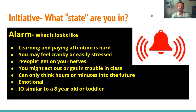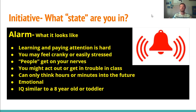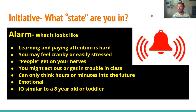The third state is the alarm state. Maybe you're sensing a little pressure or some stress, or something happened at home, or you argued with somebody and you're feeling a little tense. Learning and paying attention is hard — you really have to try to focus, and sometimes you're only able to do it for a few minutes or even a few seconds. You might feel cranky or easily stressed, like you're on edge. People get on your nerves, you just want to be by yourself. You might act out or get in trouble in class, or as an adult, get in arguments with the people you work with.